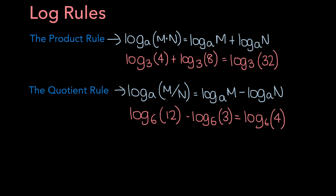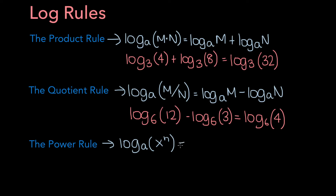The third and final rule we're going to cover in this video is the power rule. The power rule states that if you have the log base a of x to the n, this is equal to n times the log base a of x. So if you have the log base a of something raised to a certain power, you can bring that power down and multiply it as a coefficient for the logarithm.